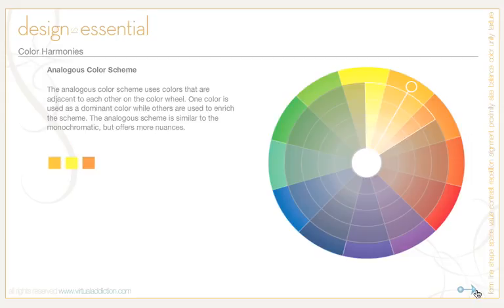The analogous color scheme uses colors that are adjacent to each other on the color wheel. One color is used as the dominant color while the others enrich the scheme. It's similar to the monochromatic scheme but offers more nuances. It's easy to create but looks much richer. Cons are that it also lacks strong color contrast. When using it, avoid combining too many hues as it may ruin the color harmony, and avoid combining warm and cool colors.